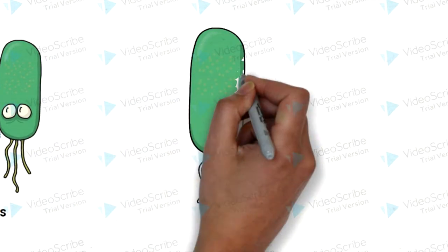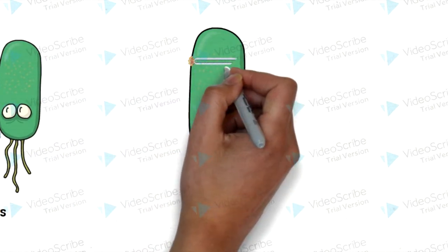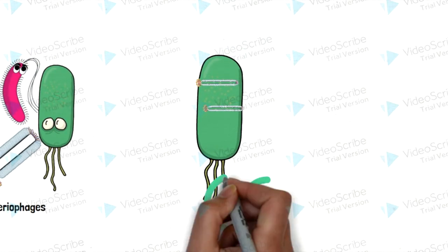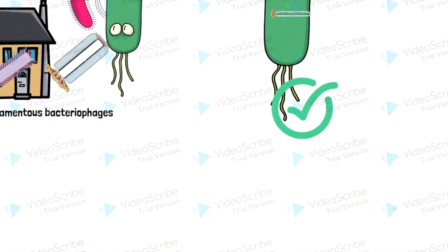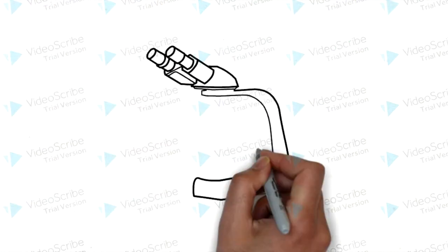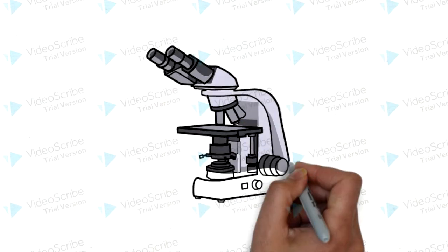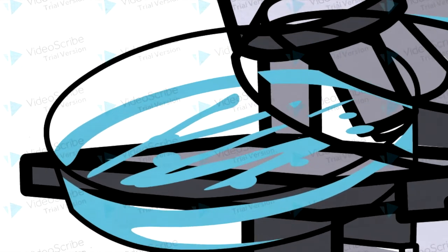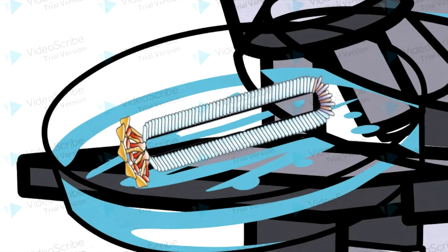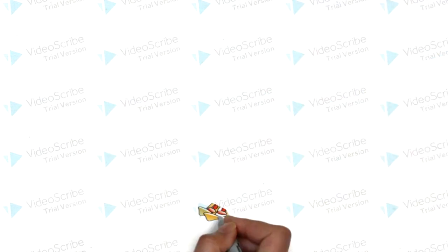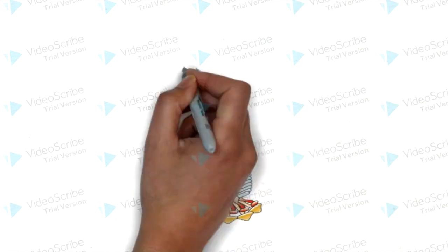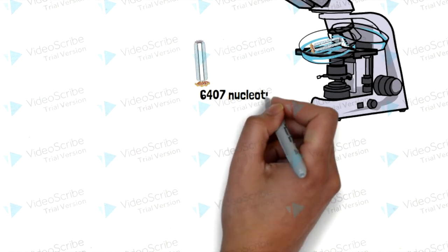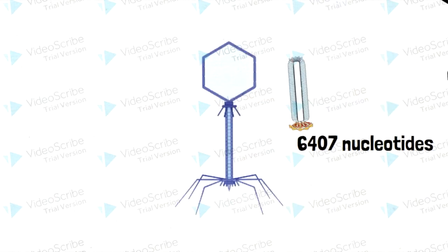M13 phage has the advantage of being able to reproduce within the infected host without causing cell lysis. Currently, M13 bacteriophage has been extensively investigated and much is now known about its biochemical, biophysical, and genetic characteristics. It is one of the smallest filamentous bacteriophages known, with a size of 6407 nucleotides, and it is smaller than the lambda phage.